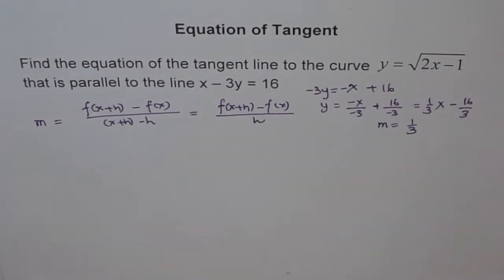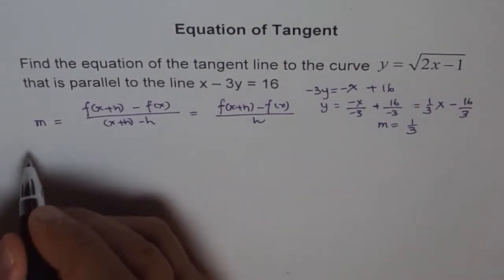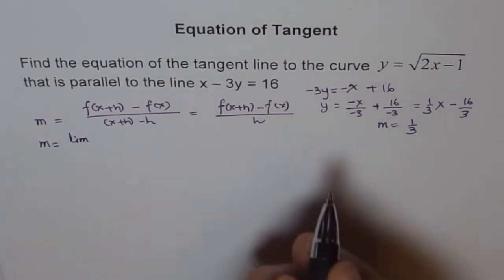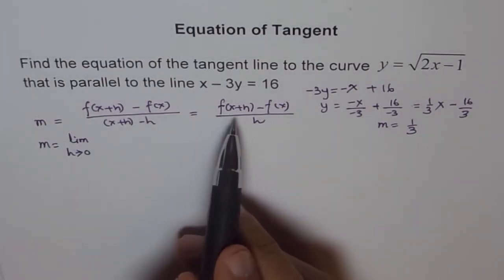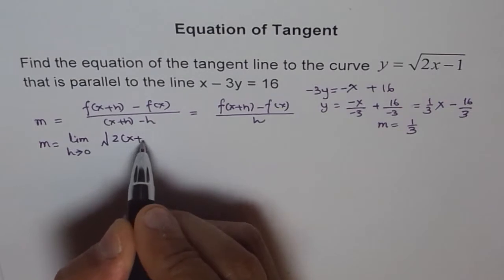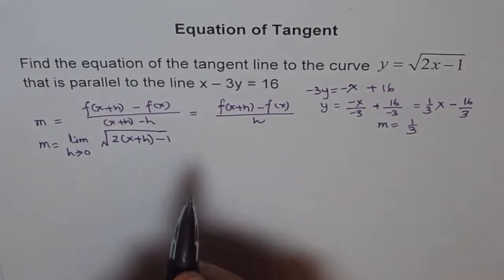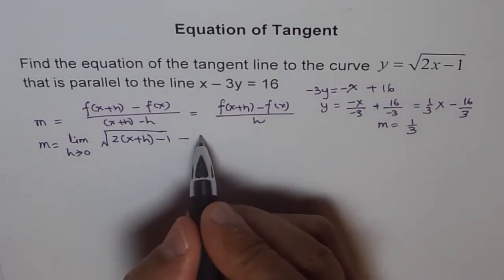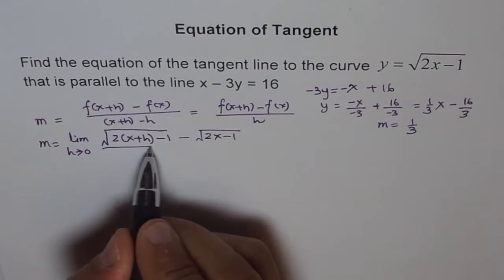Since h is very small, we use the concept of limit with h approaching 0. So slope m equals limit as h approaches 0. f(x plus h) means replacing x with x plus h, giving square root of 2 times (x plus h) minus 1. Minus f(x), which is square root of 2x minus 1, all divided by h.